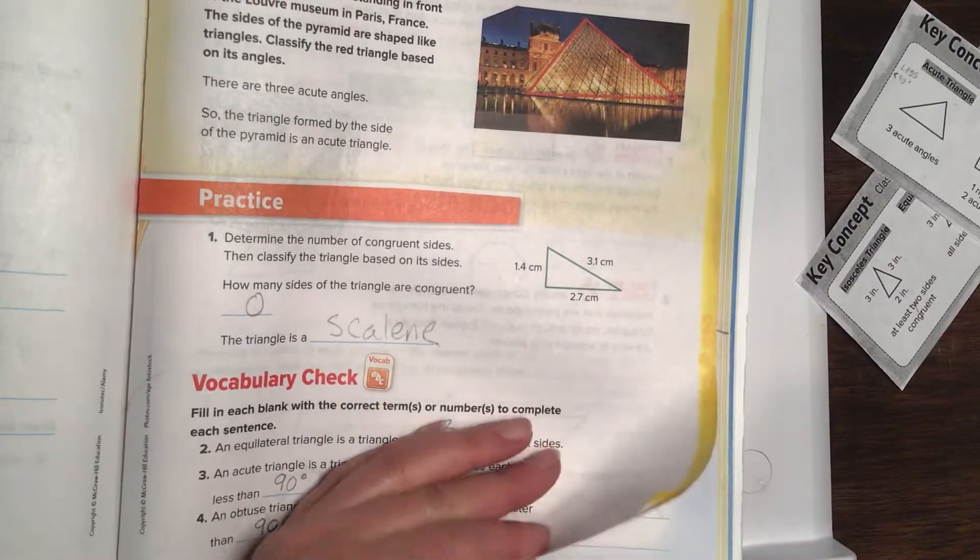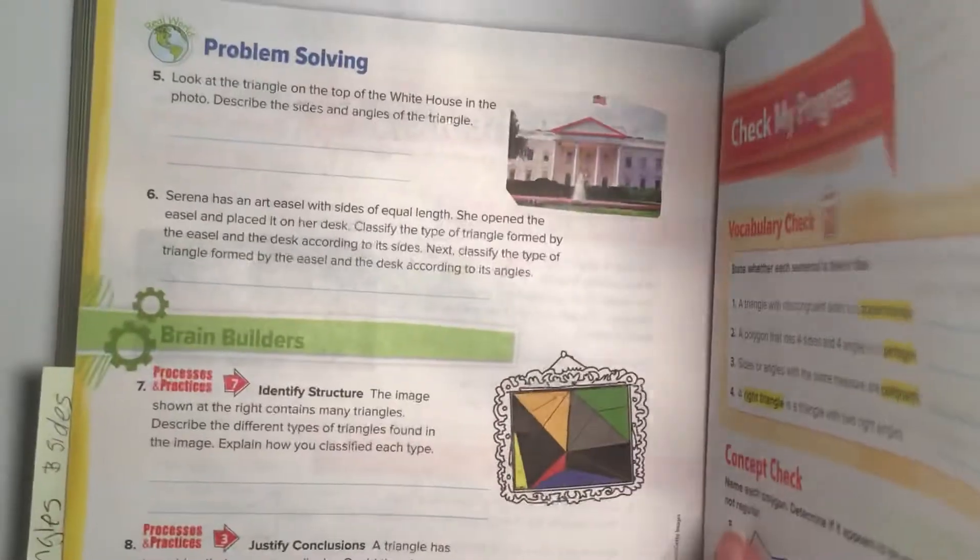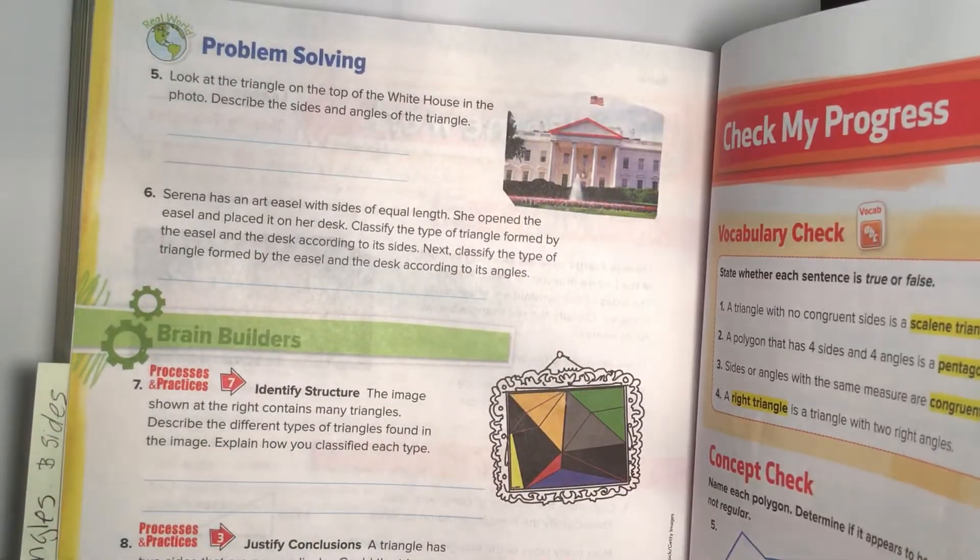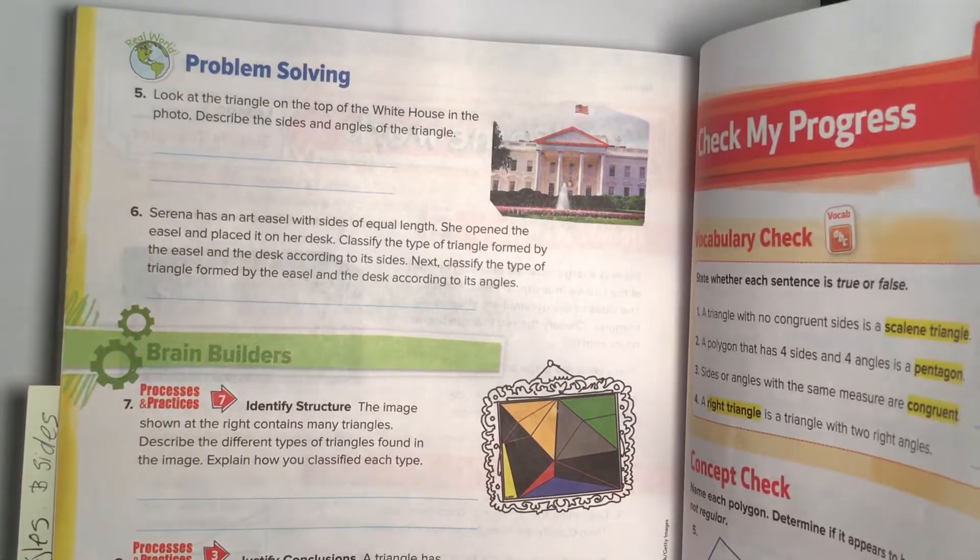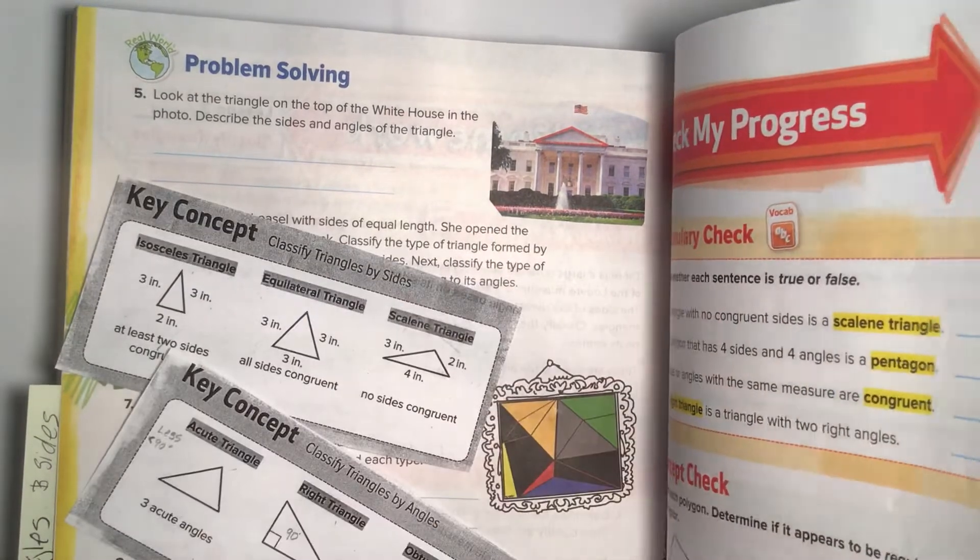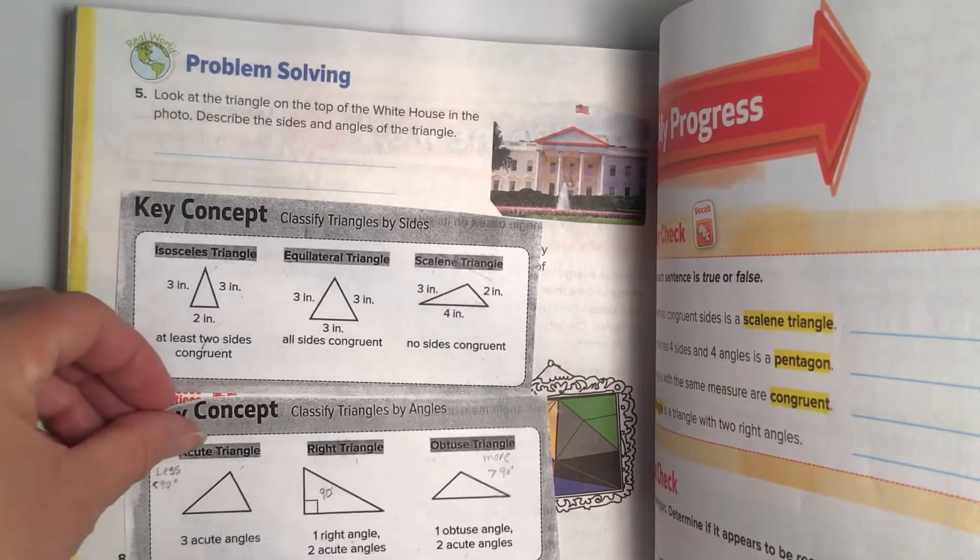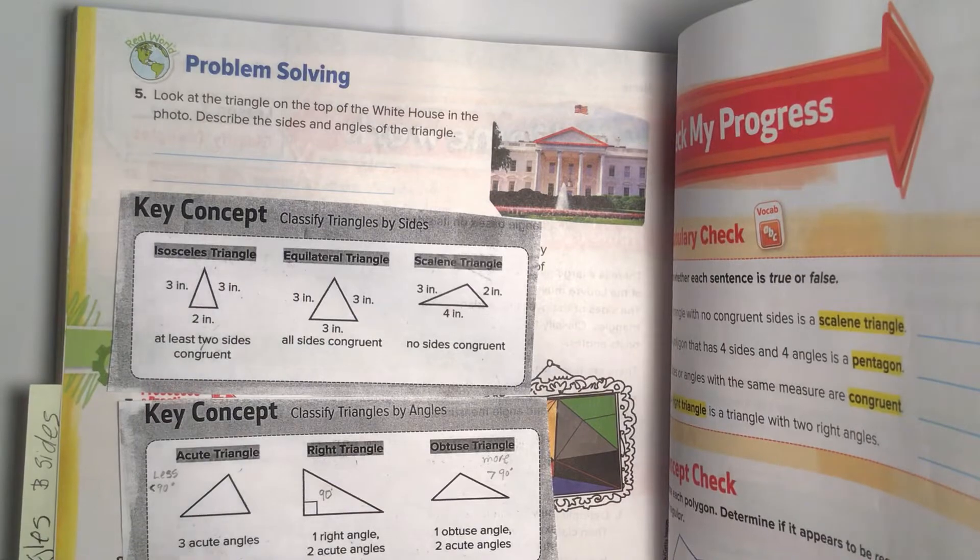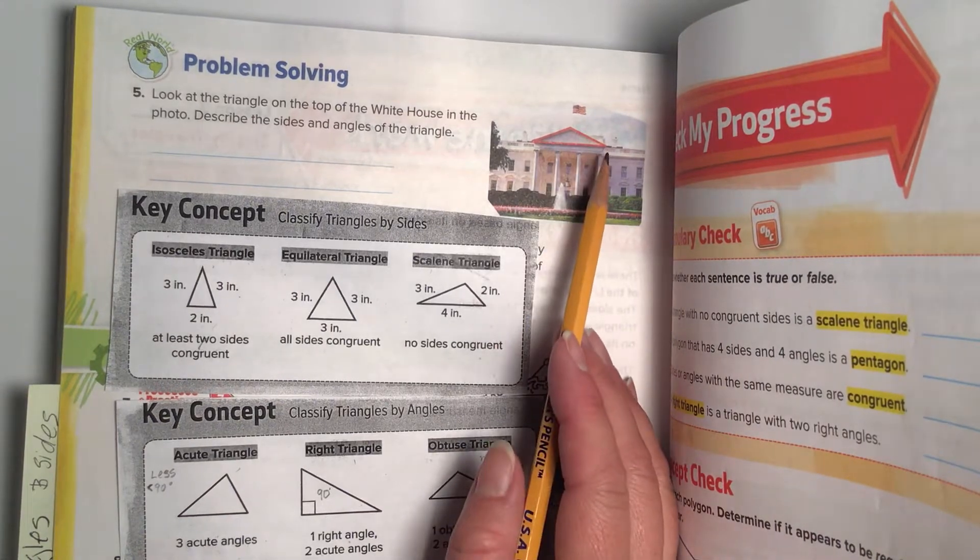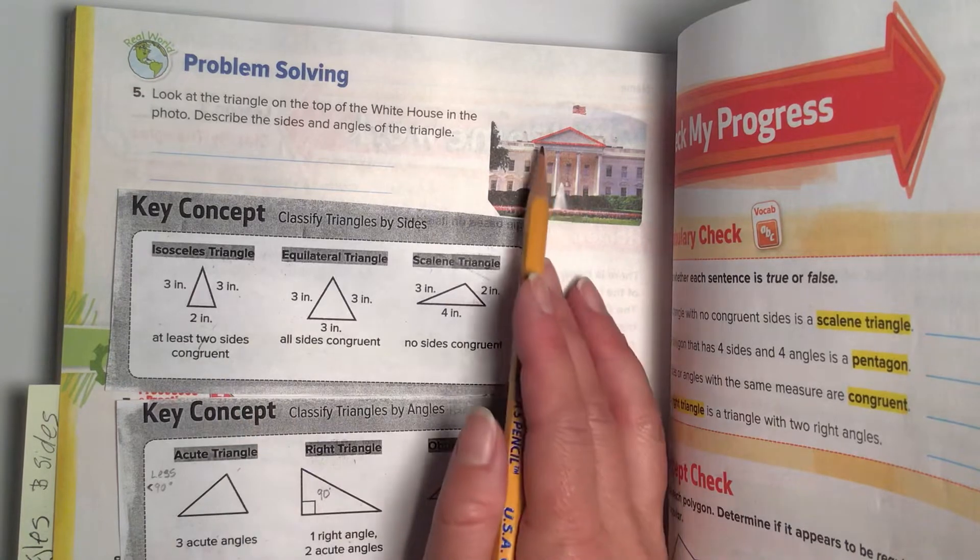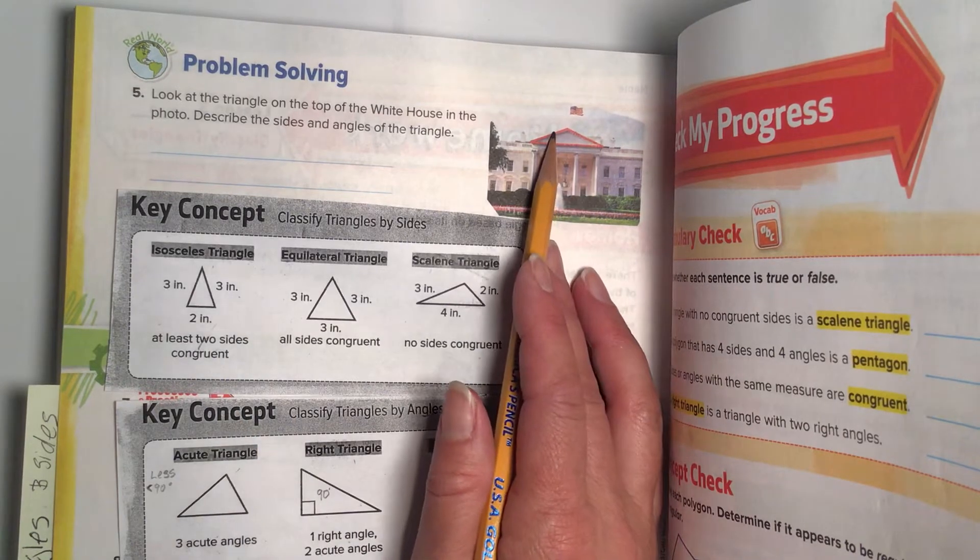Okay, we are on page 920, please. Problem solving. Look at the triangle on top of the White House in the photo. Describe the sides and the angles. Okay, I'm gonna pull this back out because it's gonna help us out with this one. Sides and the angles. Let's look at it. So I see on the sides, we are gonna classify it whether they're congruent or not.